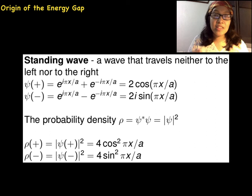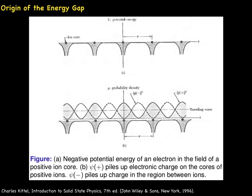The probability density is obtained by ψ* ψ. So we get ρ₊ and ρ₋. ρ₊ describes the piling up of electrons, which have negative charge, on the positive ions located at x equals zero, a, 2a, and so on, as indicated in the figure. At these locations, the potential energy is the lowest.